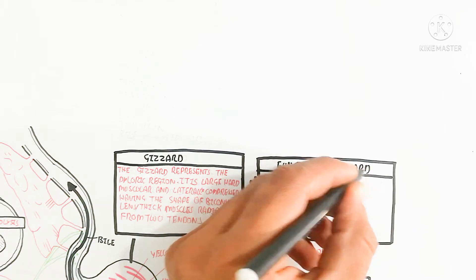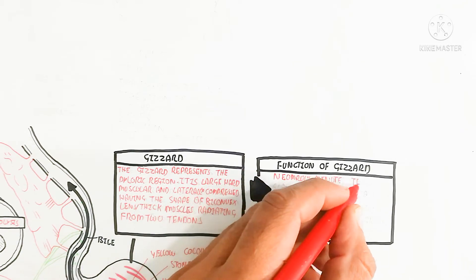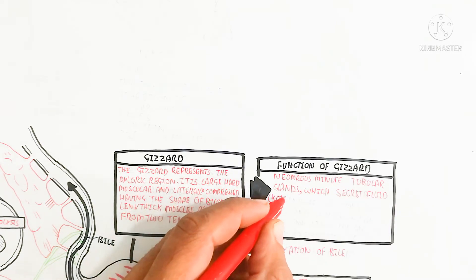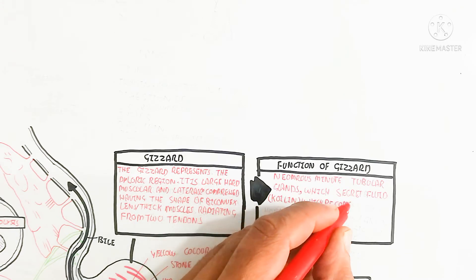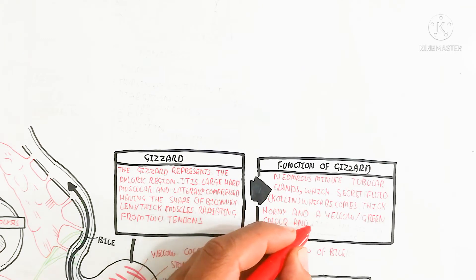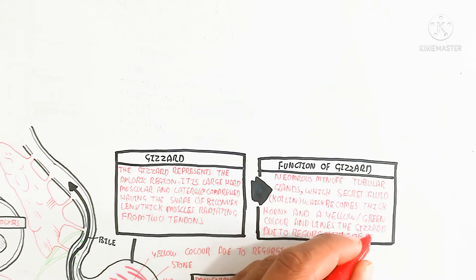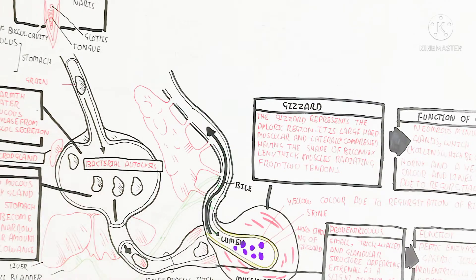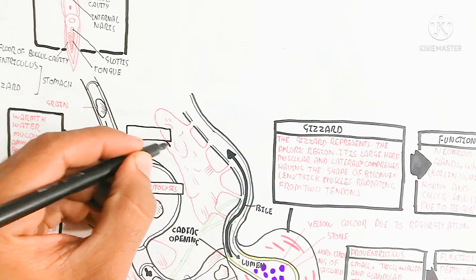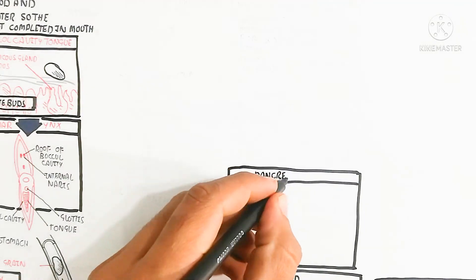The gizzard contains numerous minute tubular glands that secrete a fluid which becomes thick and horny, forming a yellow-green lining inside the gizzard. This yellow-green coloration is due to the regurgitation of bile into the gizzard.